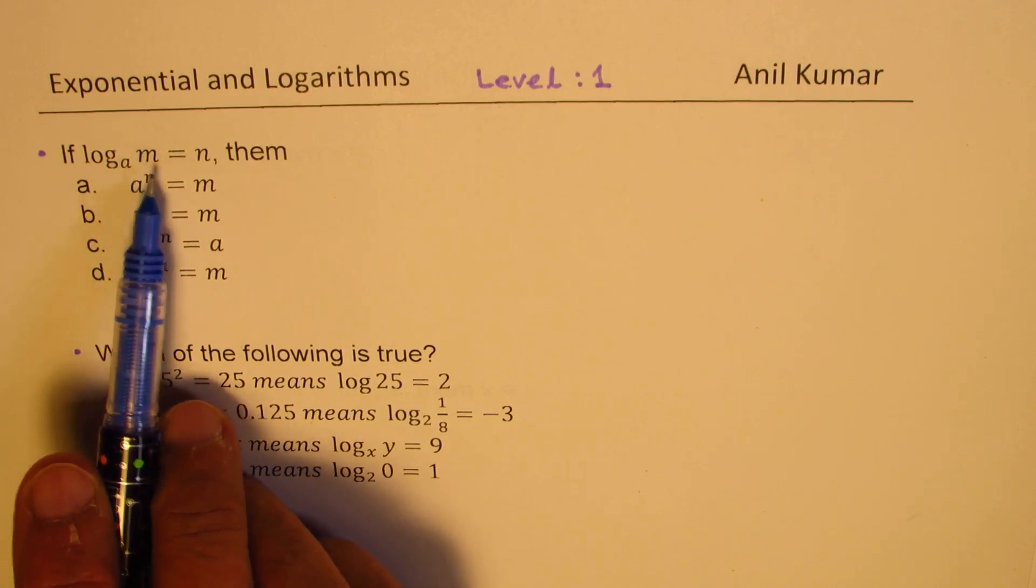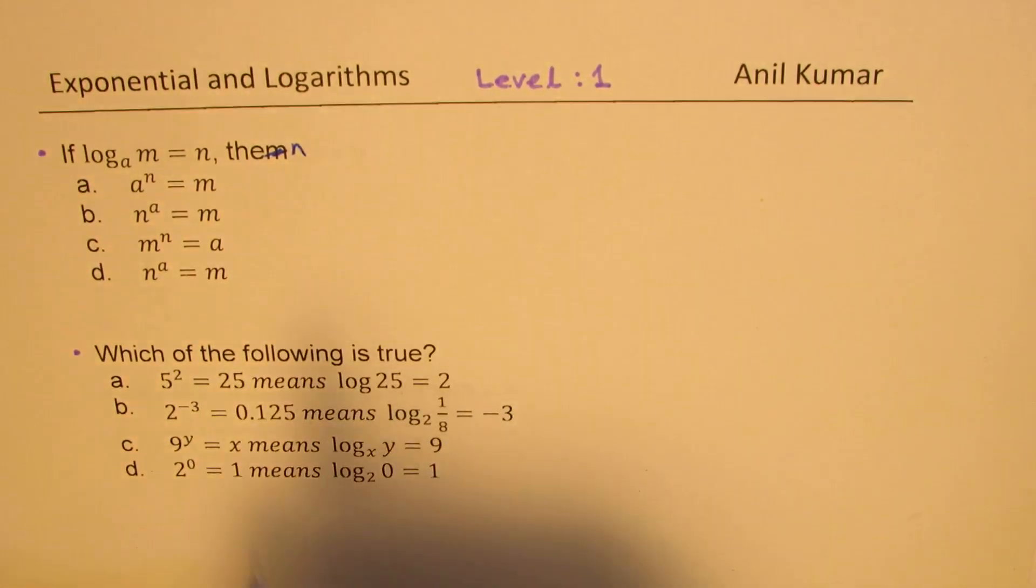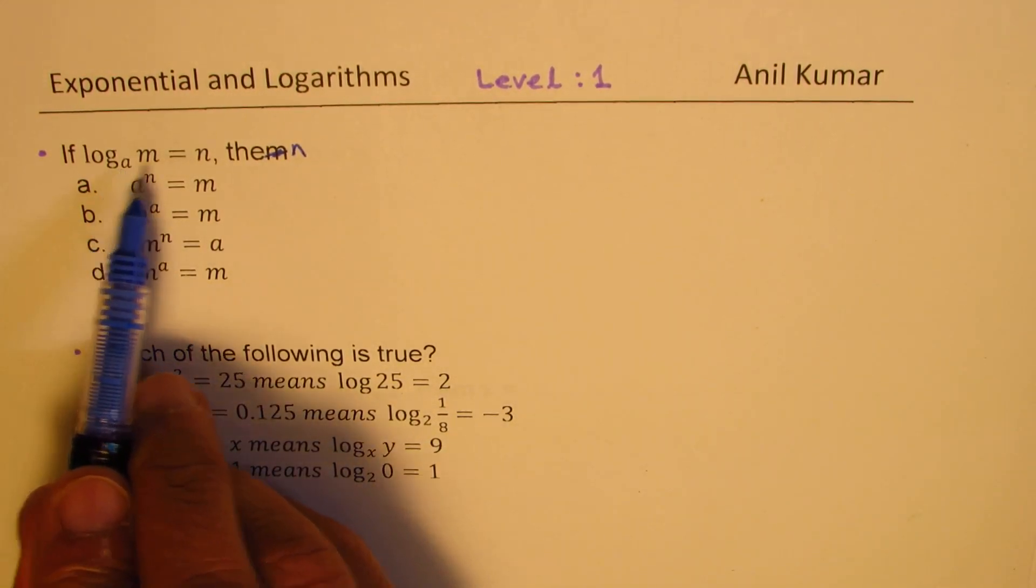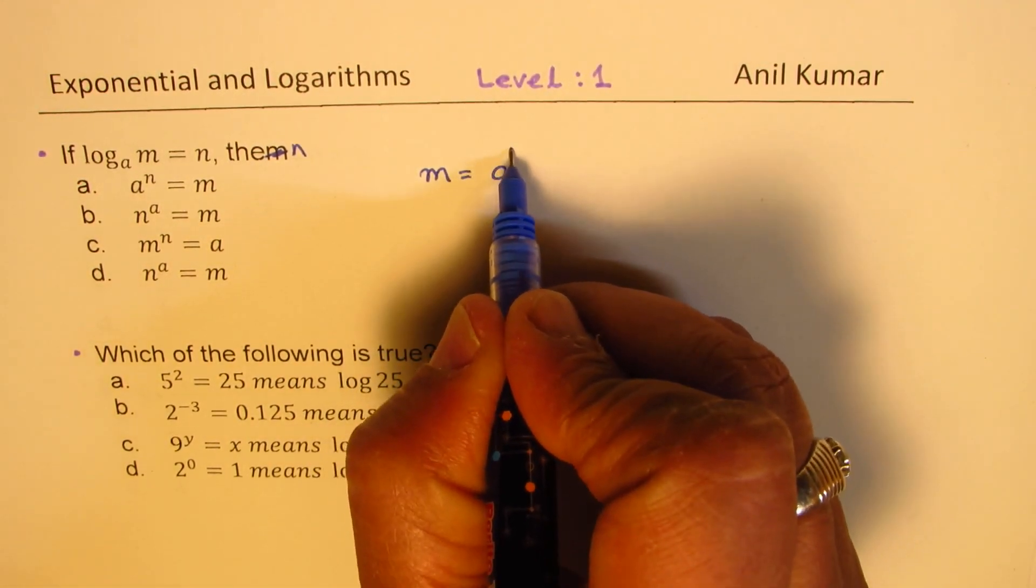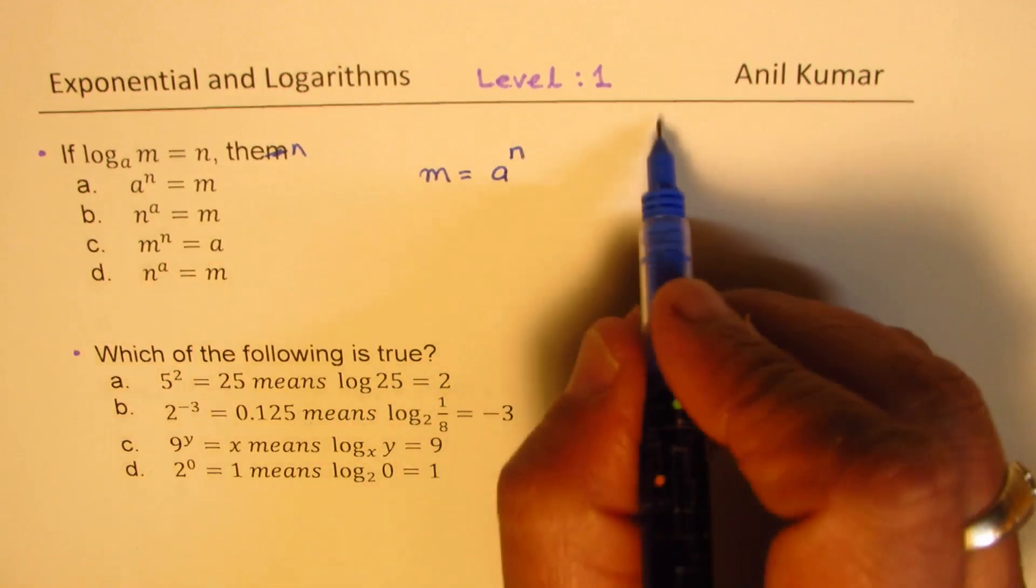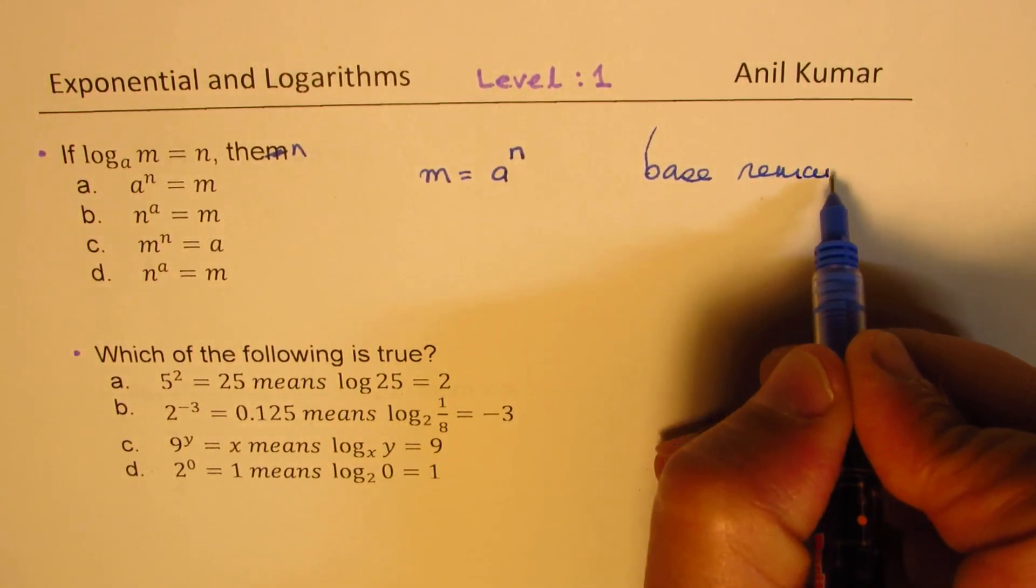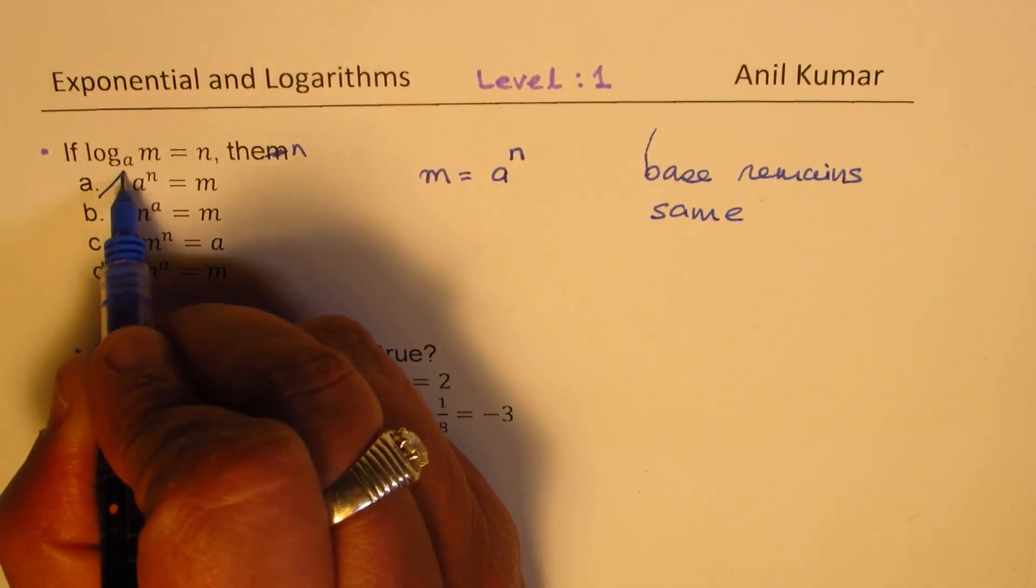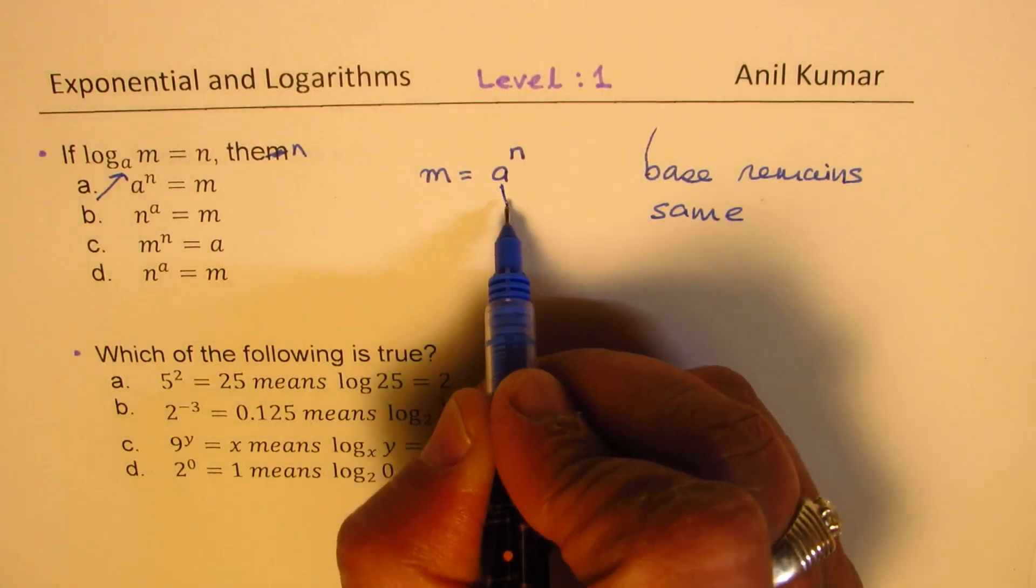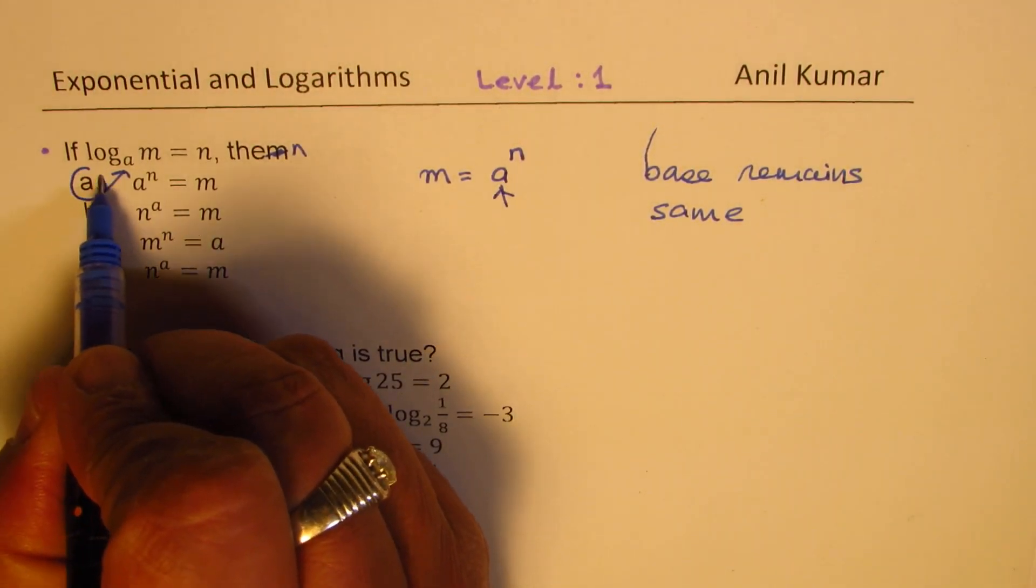If log to the base a of m is equal to n, then what is true? The base is a, right? So what is true is m should be equal to a to the power of n. Remember, the base remains same. Here is base a and there also should be base a. So option a is the right option.